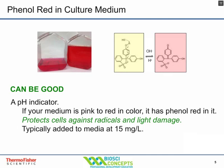Most traditional non-proprietary medias contain phenol red, while many serum-free medias do not. Phenol red was originally added as a pH indicator because before the pH meter was invented, measuring pH was difficult. It's usually added at about 15 mg per liter, giving media a red color. It's a highly conjugated molecule, and as such it acts as a free radical scavenger, protecting your cells and media from light damage.